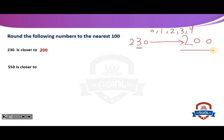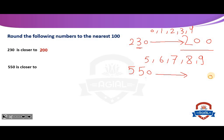Number 2: 550 is closer to what? For 550, we look at the tens place: if it is 5, 6, 7, 8, or 9, we convert the tens to 0 and increase the hundreds by 1. So the 5 in hundreds becomes 6 — 550 rounds up to 600. It's closer to 600, not 500.